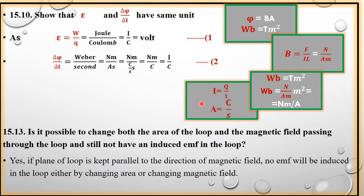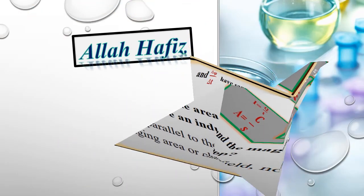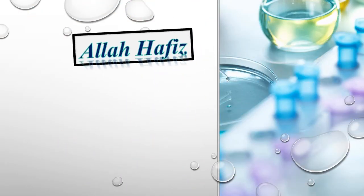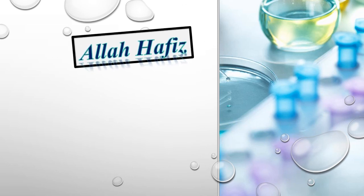Kyunki aap number of magnetic field lines passing through the coil ya loop change nahi hongi. Kyunki jis direction mein aap ki magnetic field lines hain, aap usi direction mein magnetic field lines ke parallel is mein move karein coil ko. To jo field lines us mein se guzerti thin wo change nahi hongi. To be shak us ka area badhayen, magnetic field strong karein, lekin jab tak aap coil ko parallel move karein to tab magnetic flux change nahi hogi.